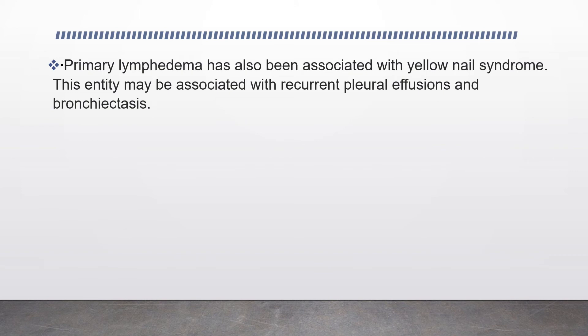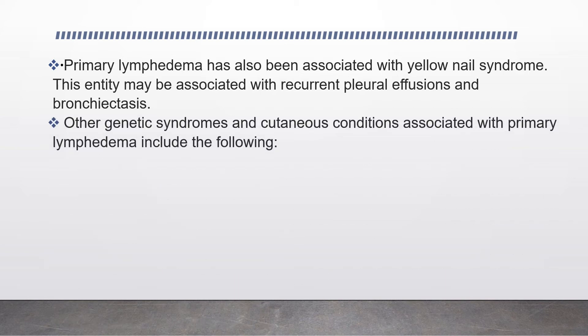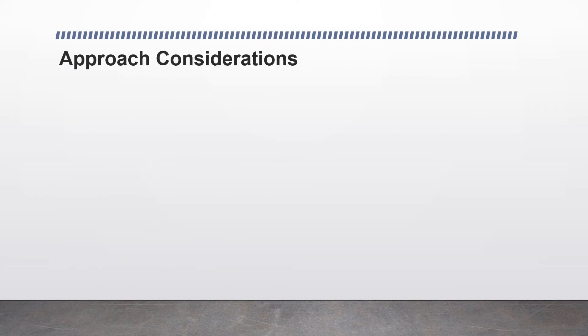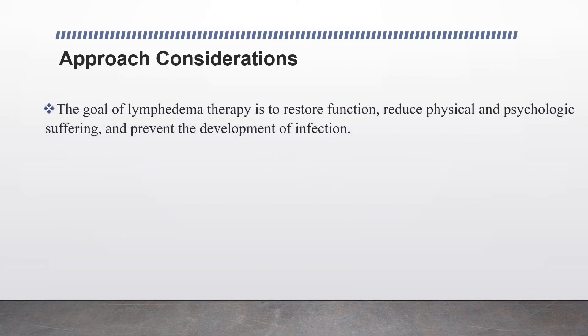Primary lymphedema has also been associated with yellow nail syndrome, which may be associated with recurrent pleural effusion and bronchiectasis. Other genetic syndromes and cutaneous conditions associated with primary lymphedema include Turner syndrome, Noonan syndrome, Klinefelter syndrome, neurofibromatosis type 1, hemangiomas, xanthomatosis, and congenital absence of lymphatics.